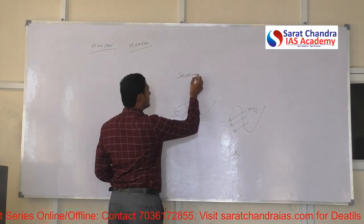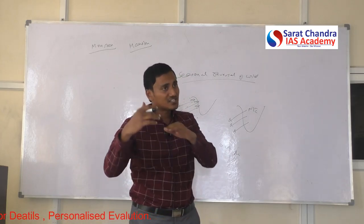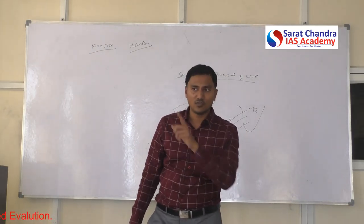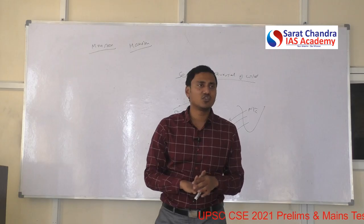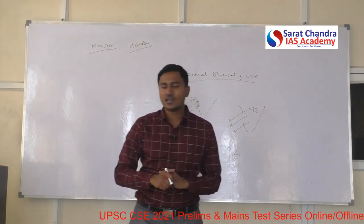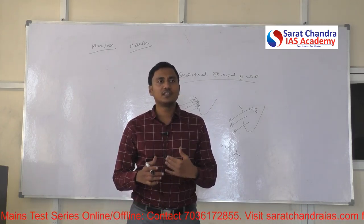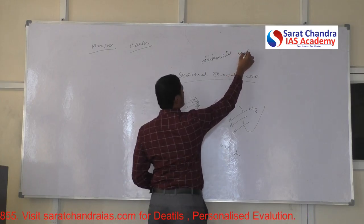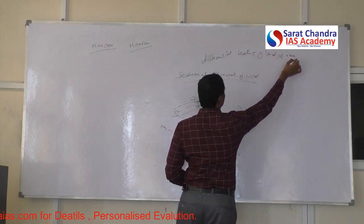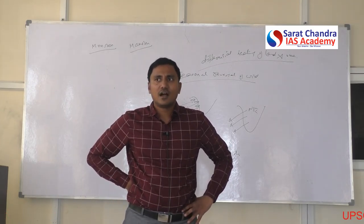Monsoon can be defined as the seasonal reversal of wind. Seasonal reversal means in one season winds blow in one direction, and in another season they reverse. However, the Mediterranean climate and climate at 60 degrees north also show seasonal reversal, but they are not called monsoon. To be called monsoon, additional criteria are required, such as differential heating of land and ocean.